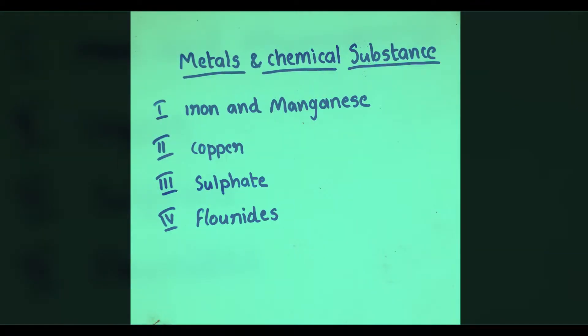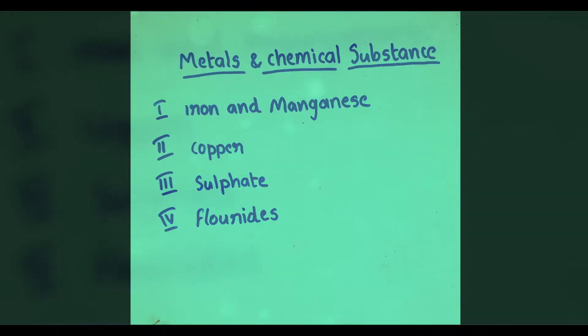Next, Chemical Characteristics. In this parameter, Metals and Chemical Substances - there are mainly four types: 1) Iron and Manganese, 2) Copper, 3) Sulfate, and 4) Fluoride.